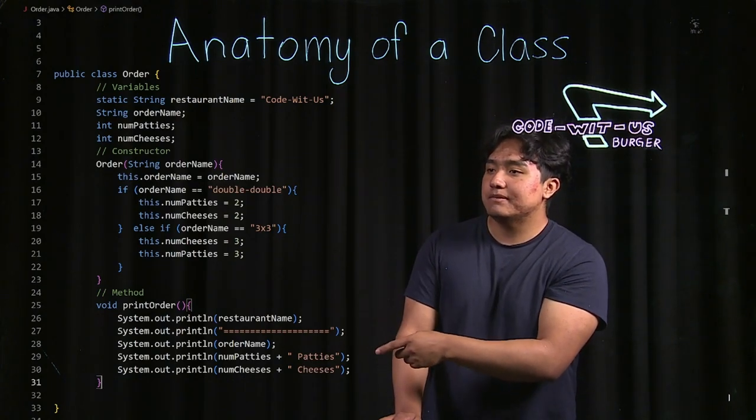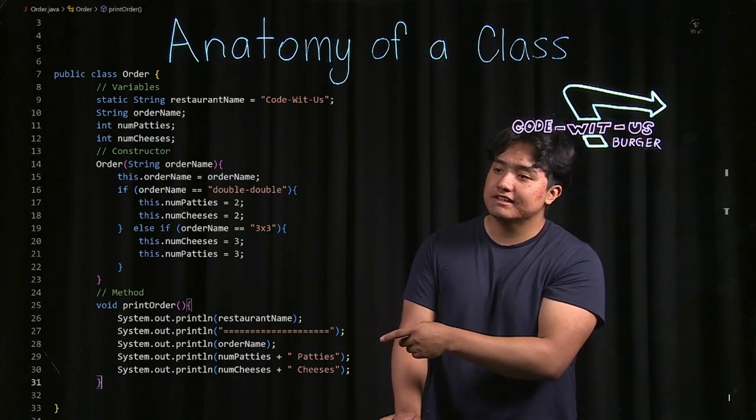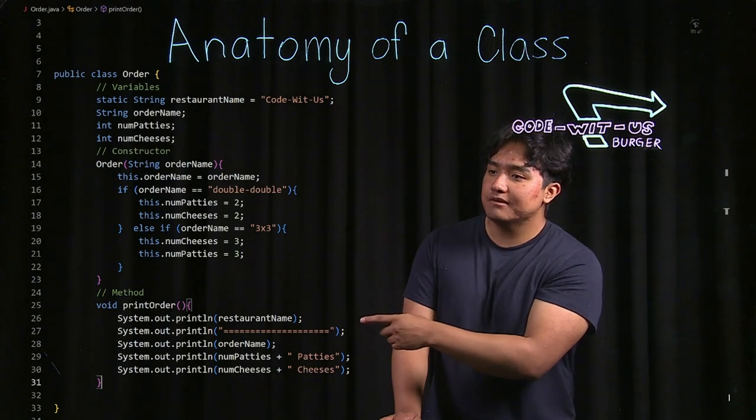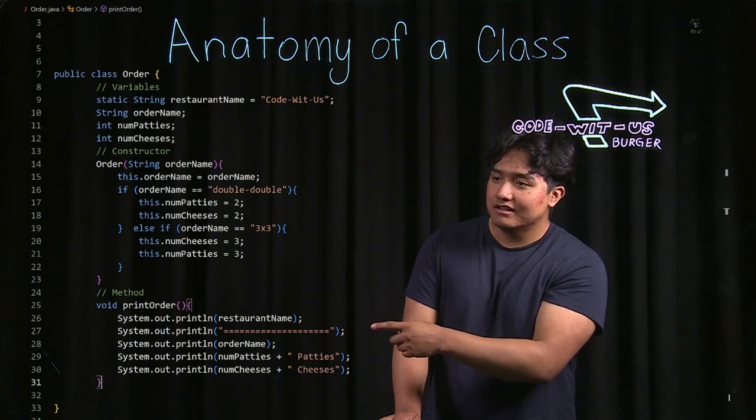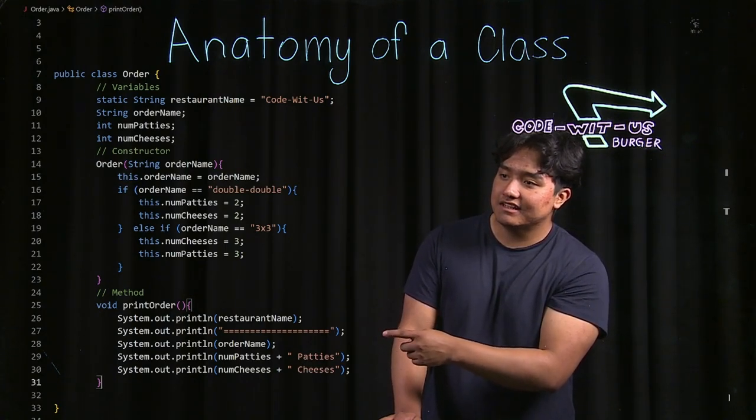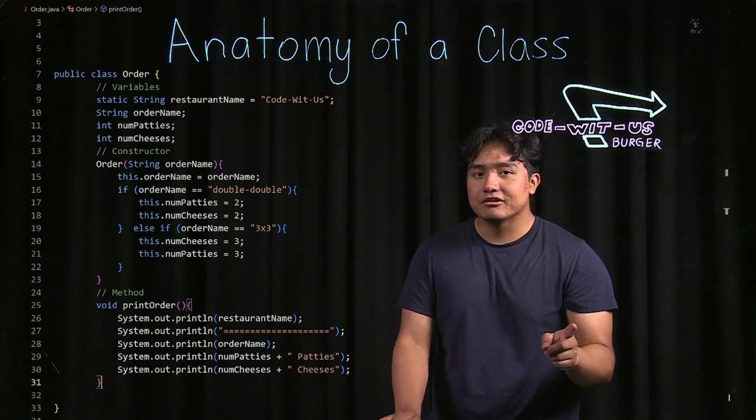So what we have here is a pretty basic printing order method which will just print the restaurant name, a little divider, the order name, and then numpatties and numcheeses. So now let's test it out in our main file.